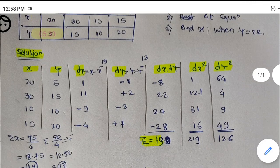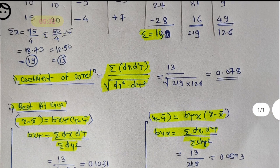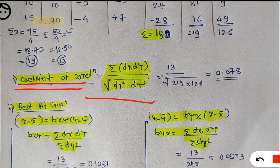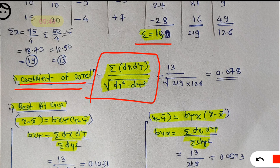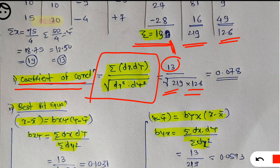Now they are asking to find the coefficient of correlation. The standard formula is: r equals summation of dx into dy divided by the square root of (summation of dx square into summation of dy square). Putting in the values: 13 divided by the square root of 219 into 126. When you solve, you will get r equals 0.078. This is the coefficient of correlation.